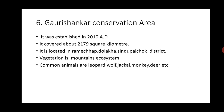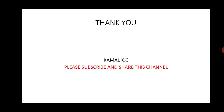Number five: Gauri Shankar Conservation Area. It was established in 2010 AD. It covers about 2,179 square kilometers. It is located in Ramechhap, Dolakha, and Sindhupalchok districts. Vegetation is mountain ecosystem. Common animals are leopard, wolf, jackal, monkey, and deer.